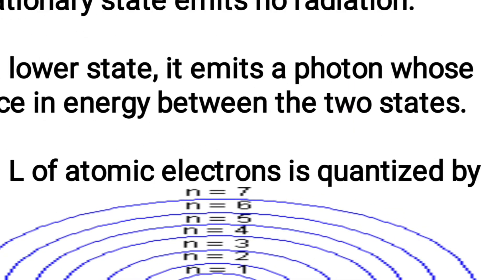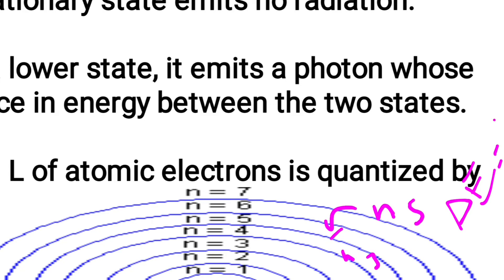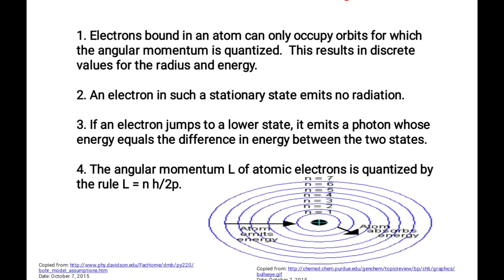The diagram shows that if an electron moves from, for example, n=5 down to n=3, the energy released in the form of a photon equals n5 minus n3. So when an electron moves from a higher energy level to a lower energy level, it releases energy equal to the difference between those two energy levels.